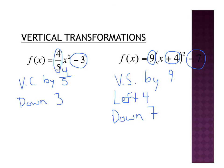Remember: inside the parentheses, like we had with the 4, we have to think opposite. So instead of going right like you might expect — because that's where the positive numbers are — we actually have to go left.